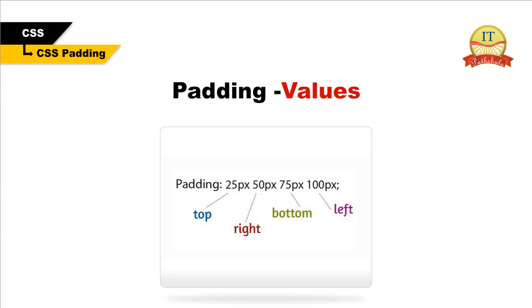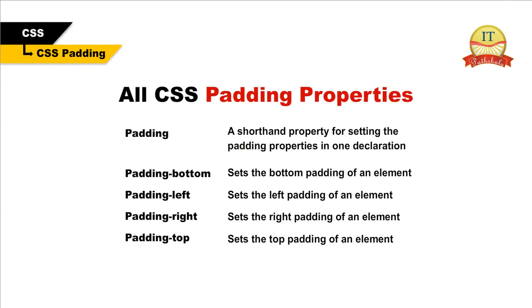Padding shorthand property. In order to shorten the code, all the padding properties are specified in one property — this is called a shorthand property. The shorthand property for all padding properties is 'padding'. The padding property can have from one to four values. For example: top padding 25px, right padding 50px, bottom padding 75px, left padding 100px. All CSS padding properties: padding (shorthand), padding-bottom, padding-left, padding-right, and padding-top.